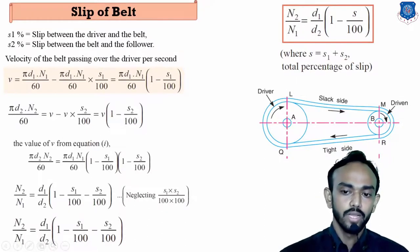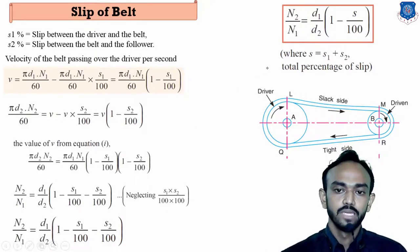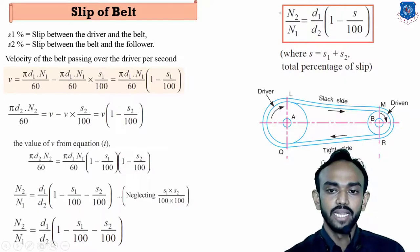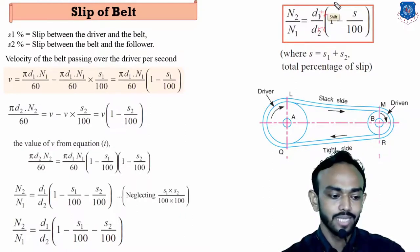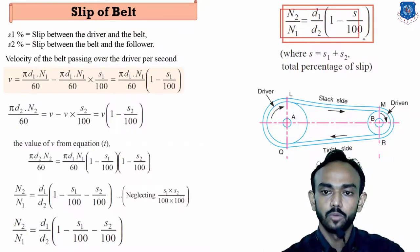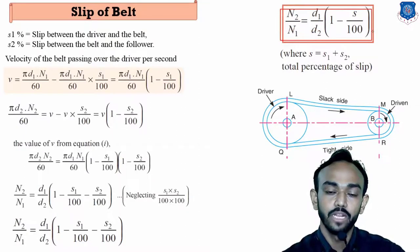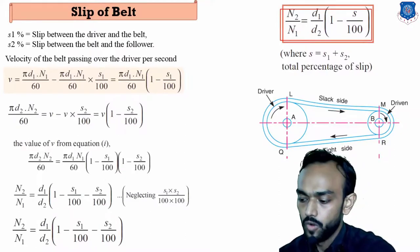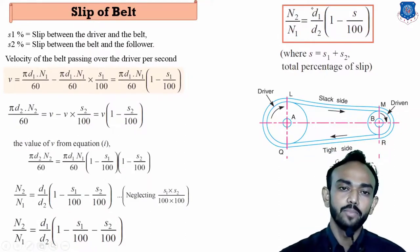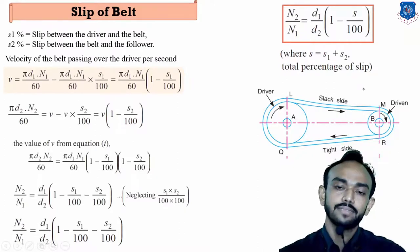If the thickness of the belt is given, we must consider it by adding t to the diameters — replacing d1 with (d1 + t) and d2 with (d2 + t) — since in the earlier formula we neglected the belt thickness.